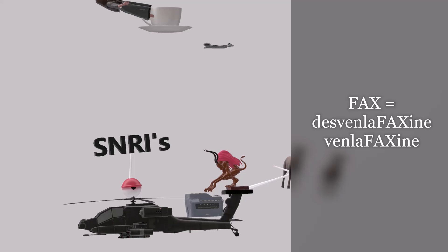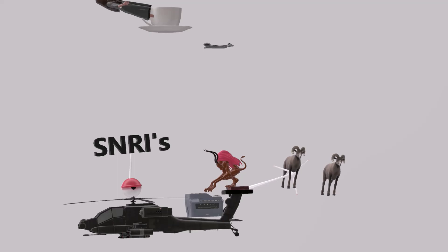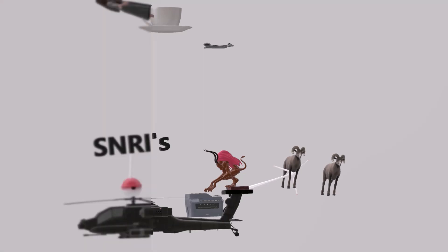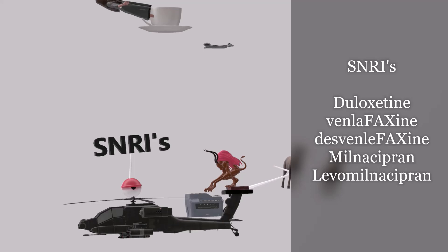Behind the doula ox are two rams. One is on top of the mill — mill ram for milnacipran. And there is a levitating ram — the levitating ram for levomilnacipran. So the SNRIs we want to be aware of are duloxetine, venlafaxine, desvenlafaxine, milnacipran, and levomilnacipran.